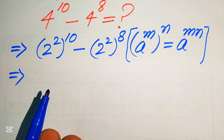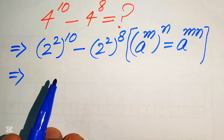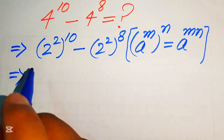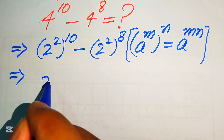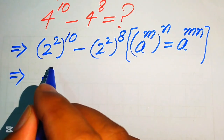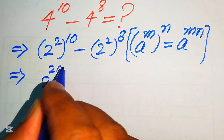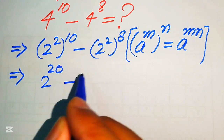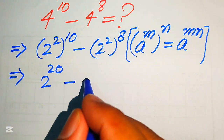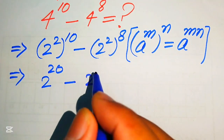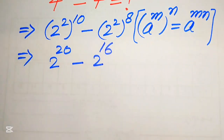In the next step we apply the exponent law: if we have a to the power of m, to the power of n, it equals a to the power of m multiplied by n. According to this law we multiply the two exponents, giving us 2 to the power of 20 minus 2 to the power of 16.